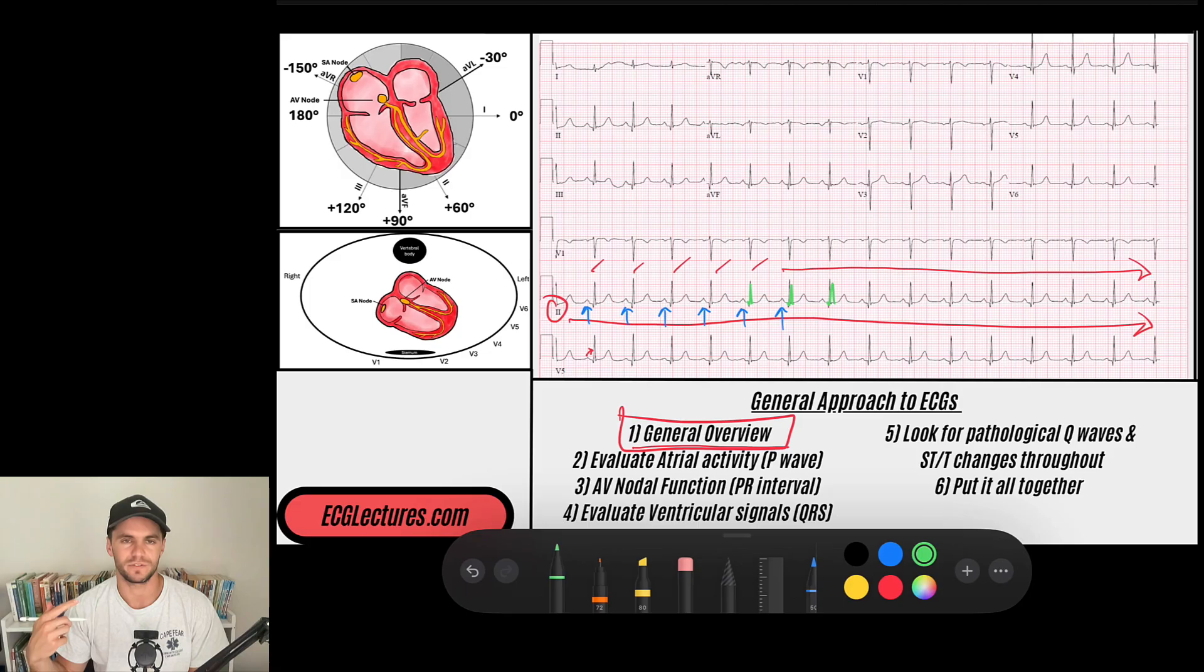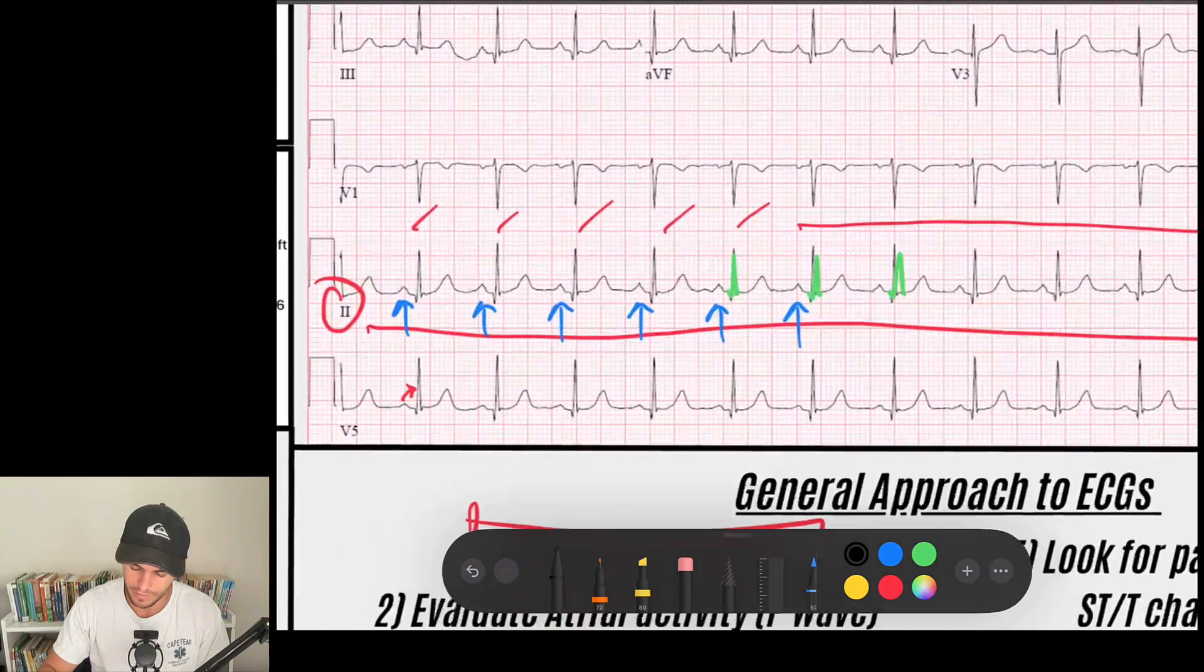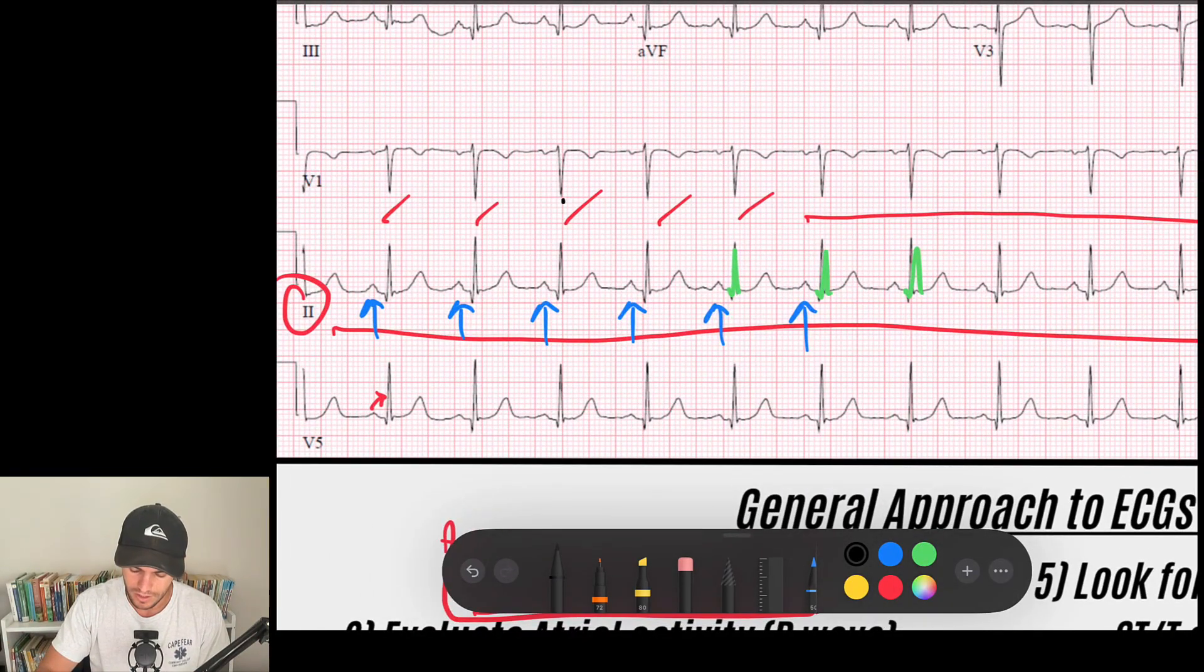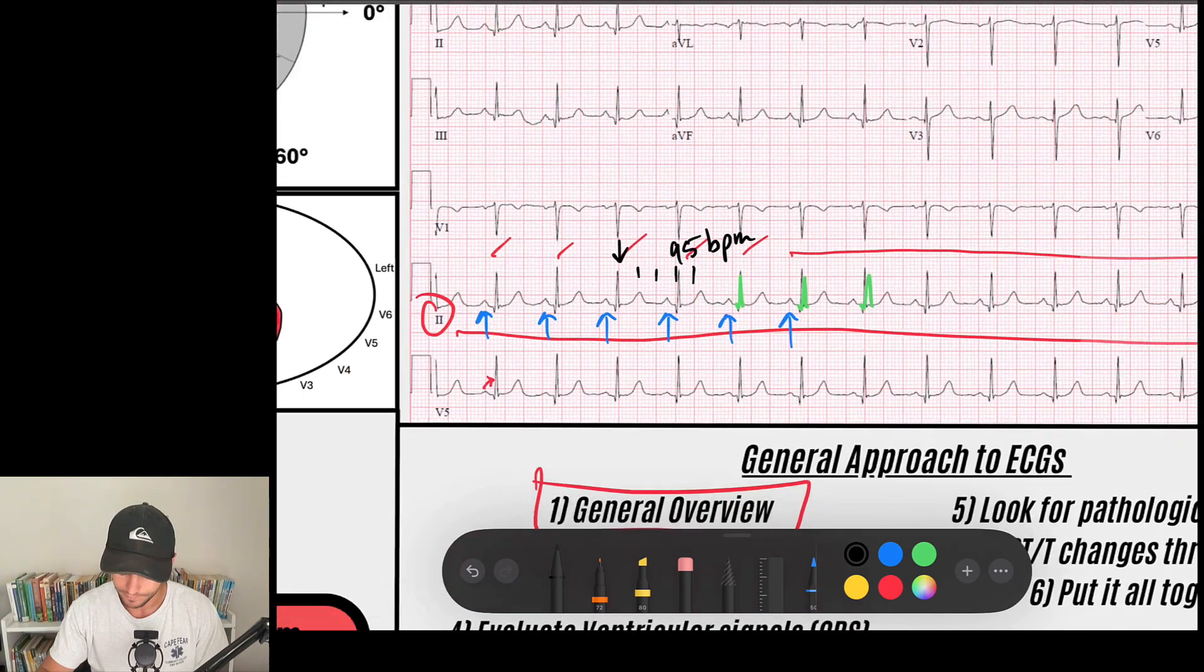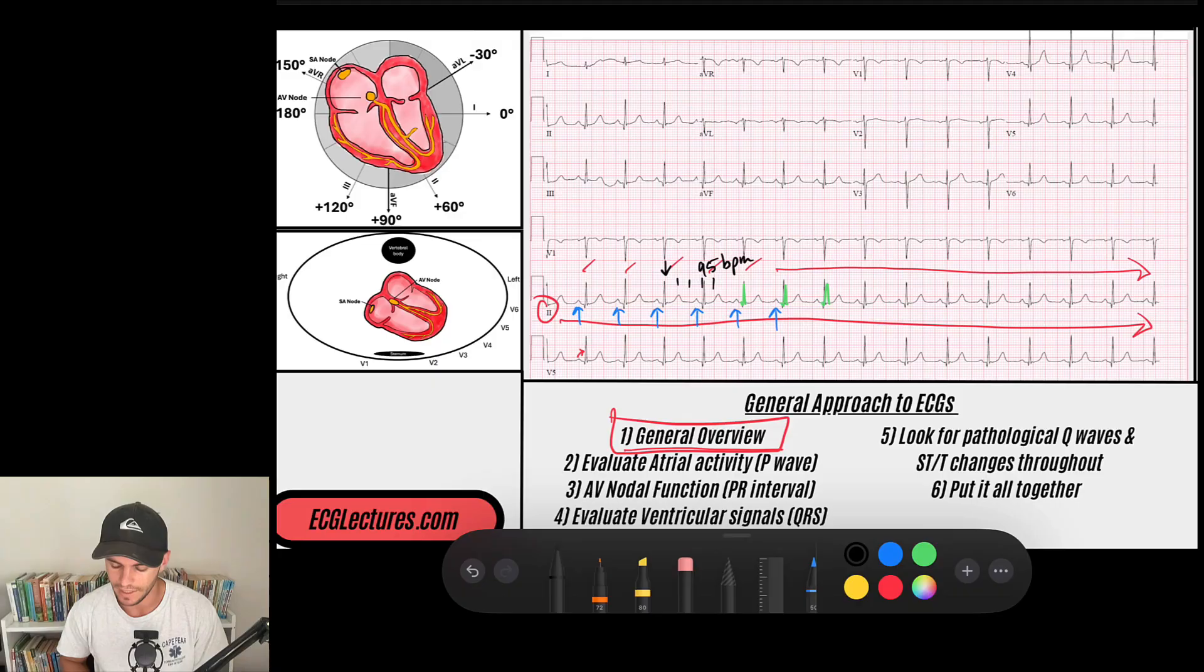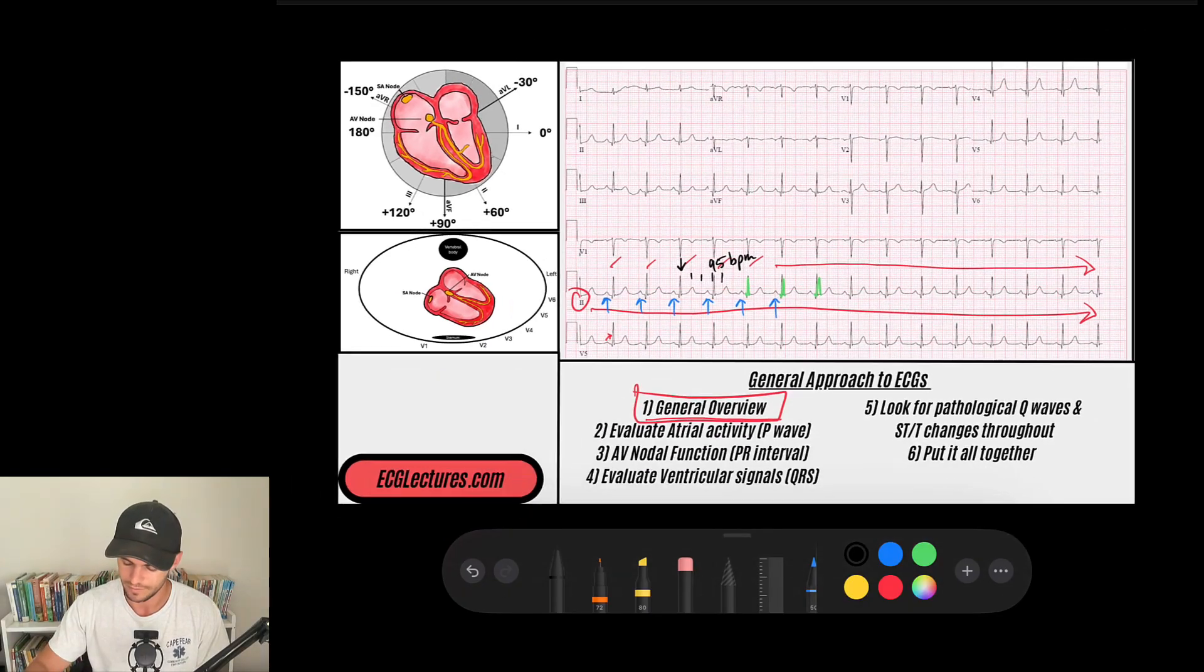That's my general overview. I'm looking for pauses, I'm looking for the rate, I'm looking for all sorts of what I would say are themes of the rhythm. So when we look at the rate of this rhythm, I find a QRS that lands on a solid line, maybe this one, and I've got 300, 150, 100, 75. So this is maybe, I don't know, we'll call it about 95 beats per minute. Let's jump into our next part.